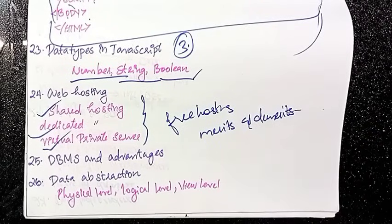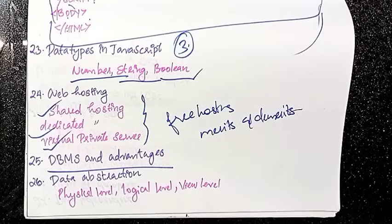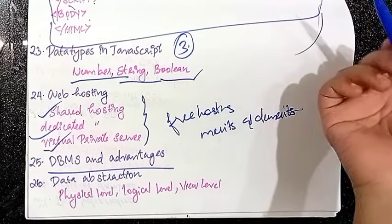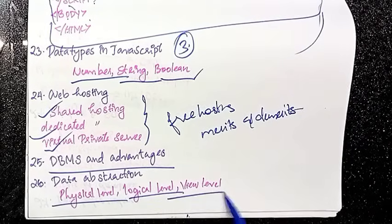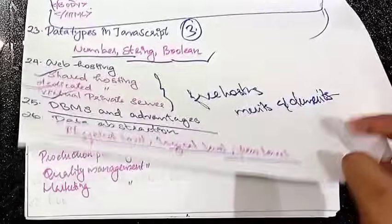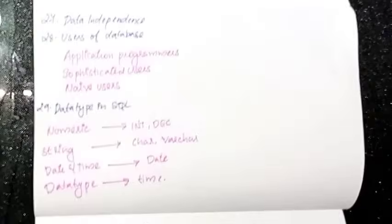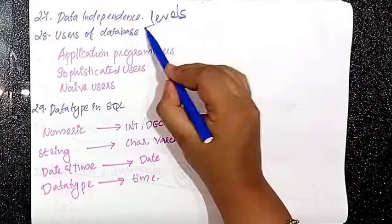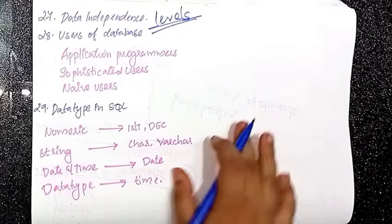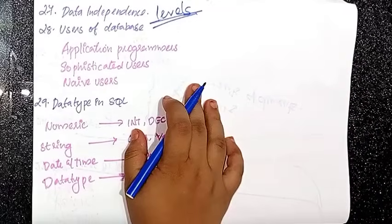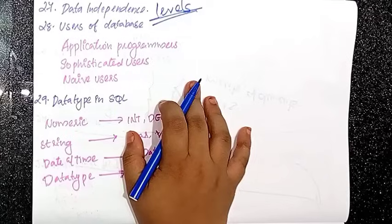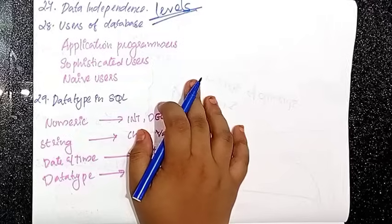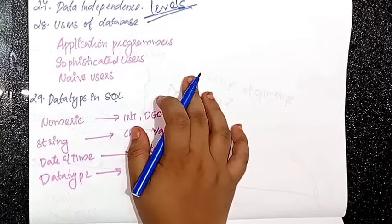Then DBMS — database management — and its advantages. Next is data abstraction with three levels: physical level, logical level, and view level. Then data independence. Users of a database include: application users, sophisticated users, naive users, and database managers.